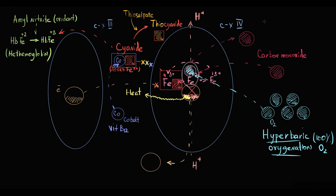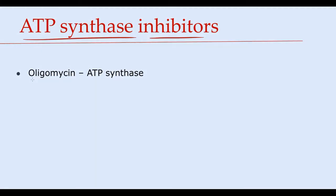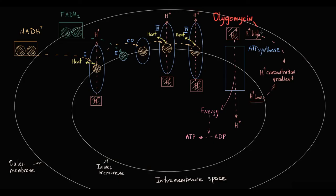Another group is called ATP synthase inhibitors. And the most high yield to know here is oligomycin. Oligomycin blocks ATP synthase, so hydrogen protons cannot cross through it, thereby there is no energy generation and thereby no ATP production.